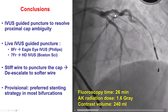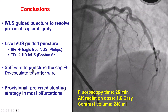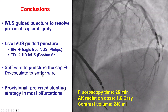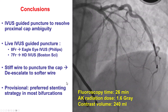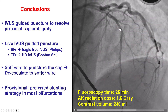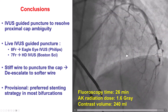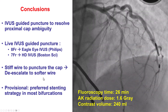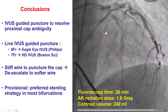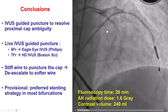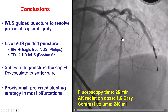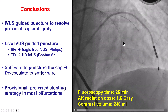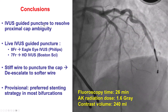As soon as we cross the proximal cap, we de-escalate to a softer wire — a Gladius Mongo in our case. Finally, when it comes to stenting with bifurcations present, the provisional strategy is preferred in most bifurcations, especially when there is no significant disease into the side branches. Thank you.